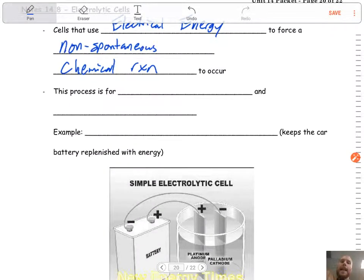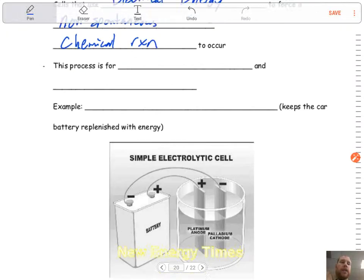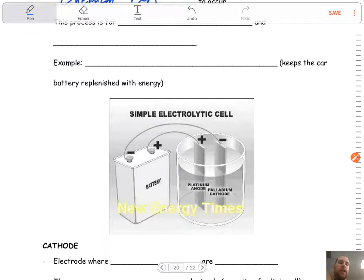Non-spontaneous chemical reaction to occur. So, whereas our last cell, those were spontaneous, we looked at table J. We will not be using table J here because this is a forced reaction. So if you take a look here at this picture, this example of an electrolytic cell, what do you see as the big difference? Big difference, guys, you have a battery.